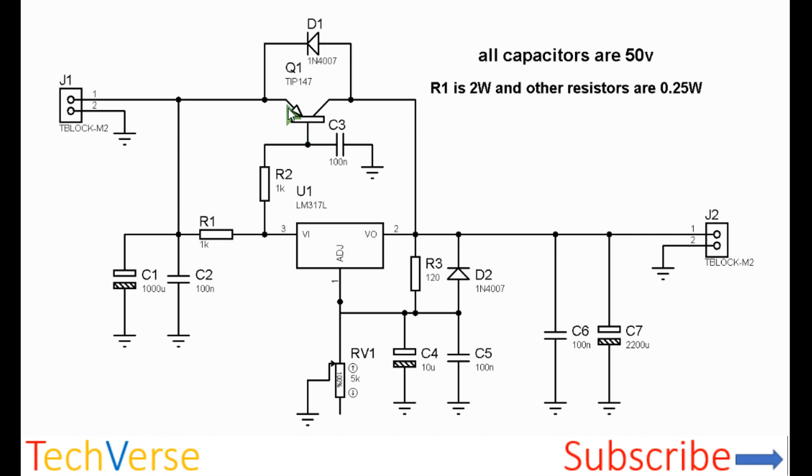All the extra current will be bypassed and will pass through the TIP147 rather than the LM317, since the LM317 can handle a maximum of up to about one and a half amperes.